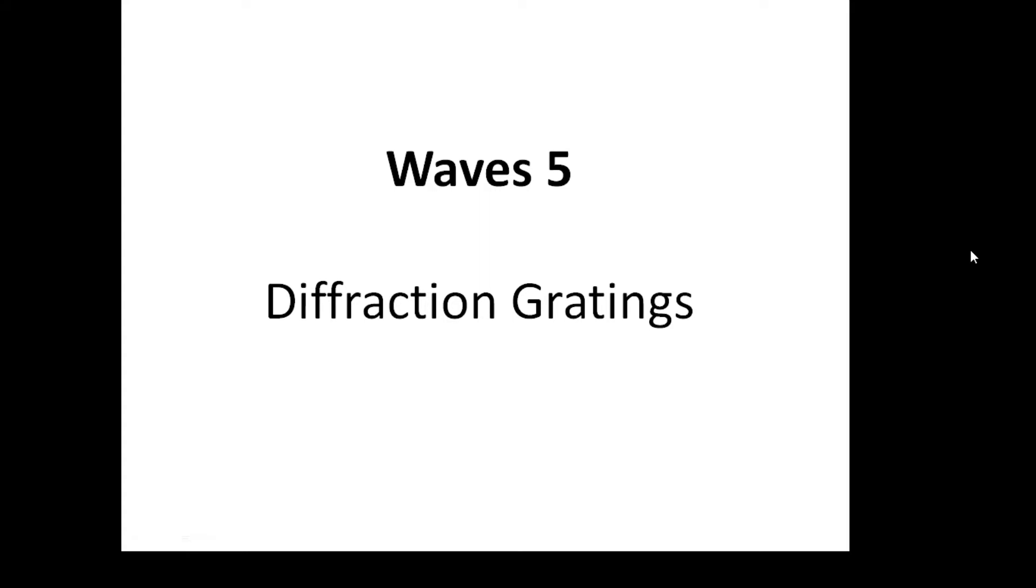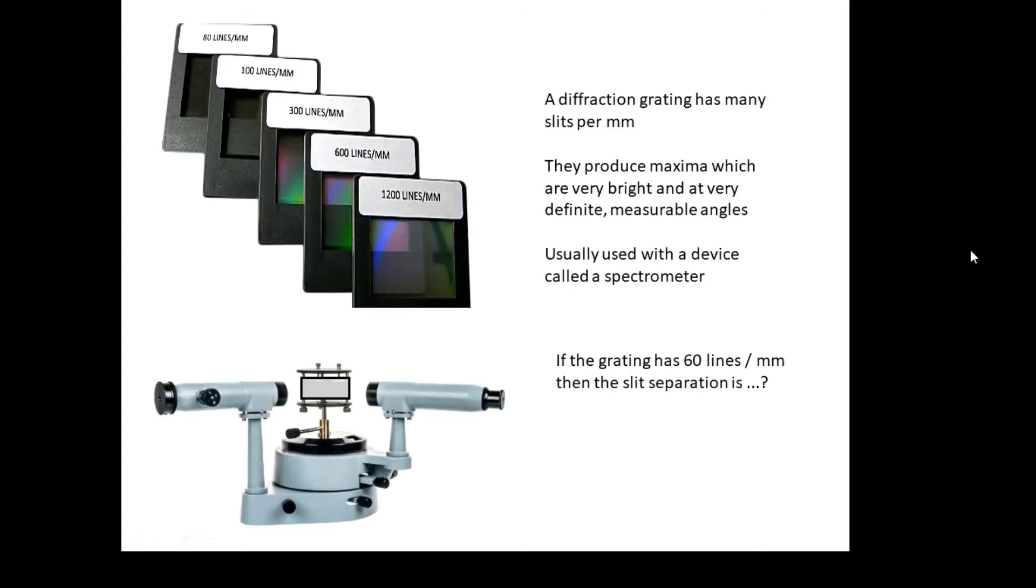Waves 5 is about diffraction gratings. In my last video we had two slits; now we're going to have lots and lots of slits. A diffraction grating can have, if you look at this diagram, 1200 lines per millimeter – that's a lot of slits. They produce maxima which